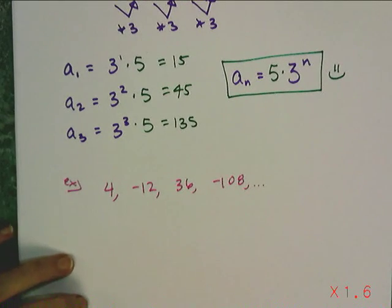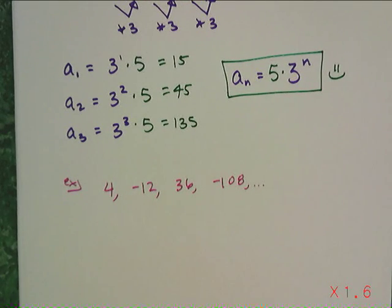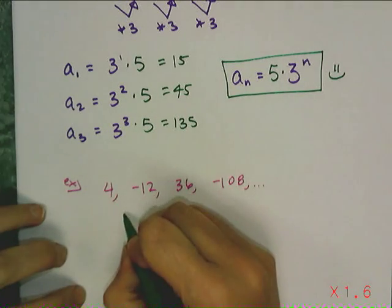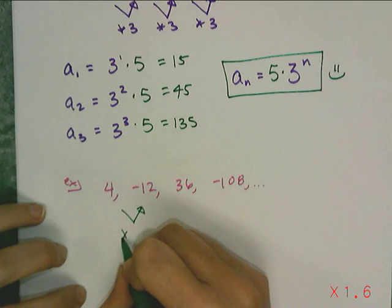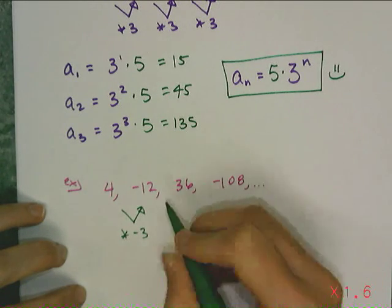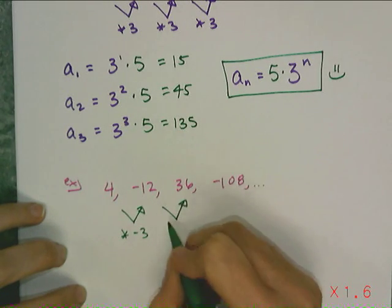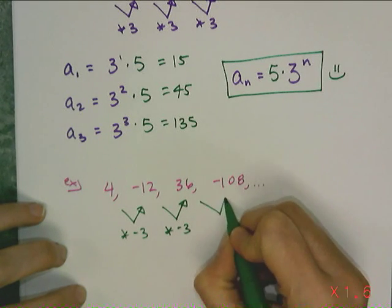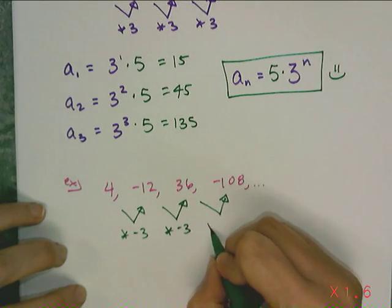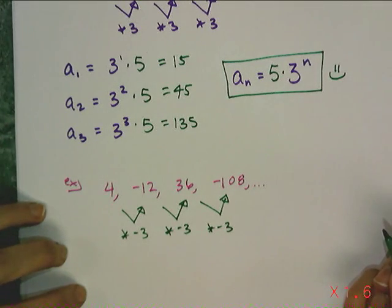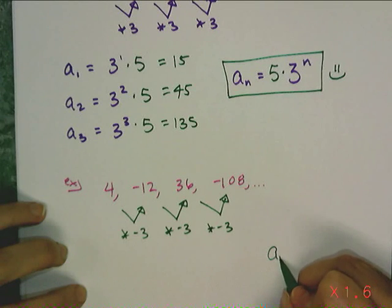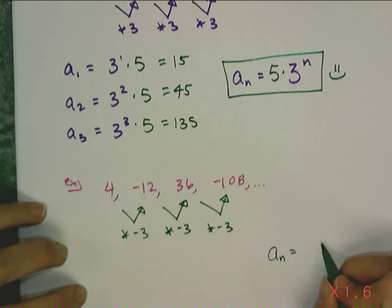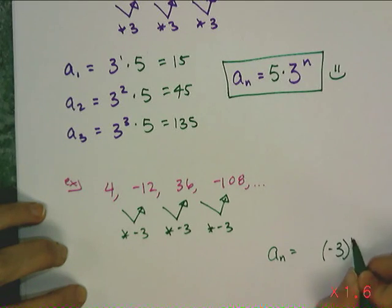I'm going to do the same thing. I need to verify first that it's geometric. And once I do that, I'll have what needs to be raised to the power. So a 4 multiplied by a negative 3 gives me a negative 12. A negative 12 multiplied by a negative 3 gives me a positive 36. And a positive 36 multiplied by negative 3 gives me a negative 108. So I know that my apparent formula has a negative 3 to the nth power.